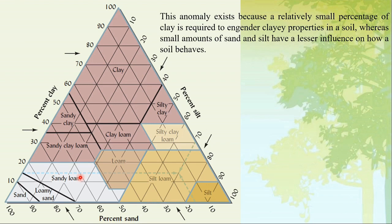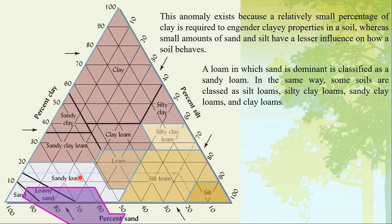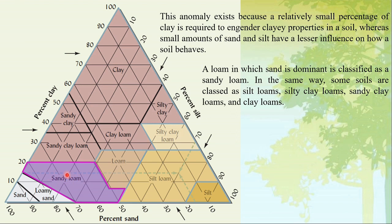This anomaly exists because a relatively small percentage of clay has a greater influence on soil behavior, whereas small amounts of sand or silt have a lesser influence. So a loam in which sand is dominant is called a sandy loam. In the same way, some soils are classified as silt loams, silty clay loams, sandy clay loams, and clay loams.